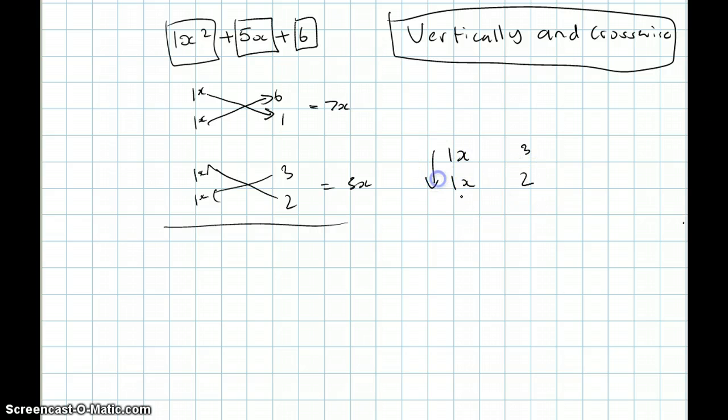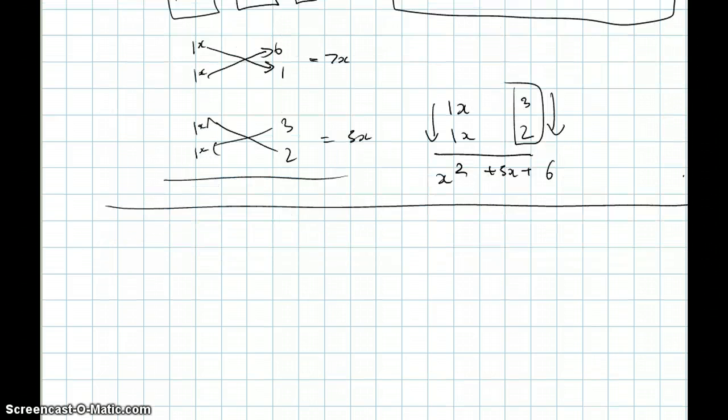We would get x squared. Then we would do, let's do this side so it's easier. We would get 6, and then 1x times 2 plus 3 times 1x would be plus 5x. See? Very simple. Very easy. Okay, let's continue on.